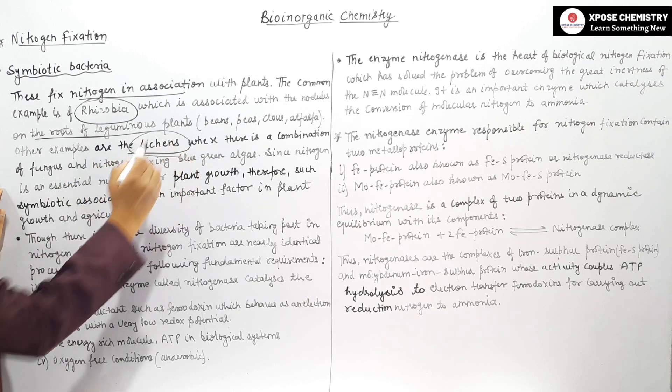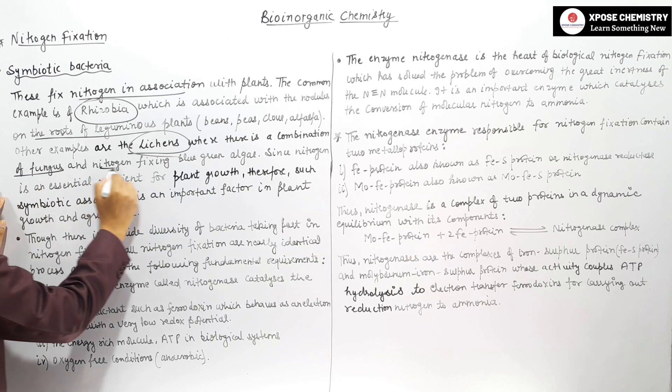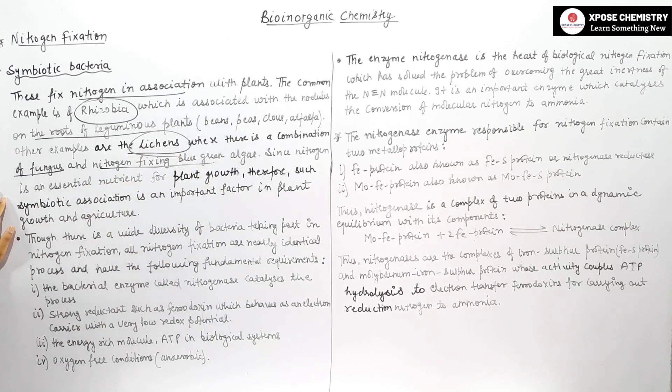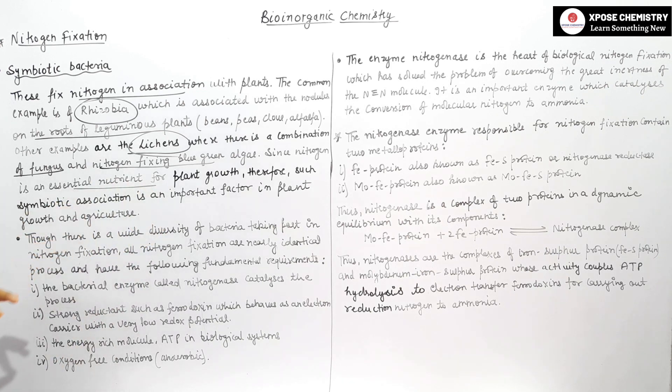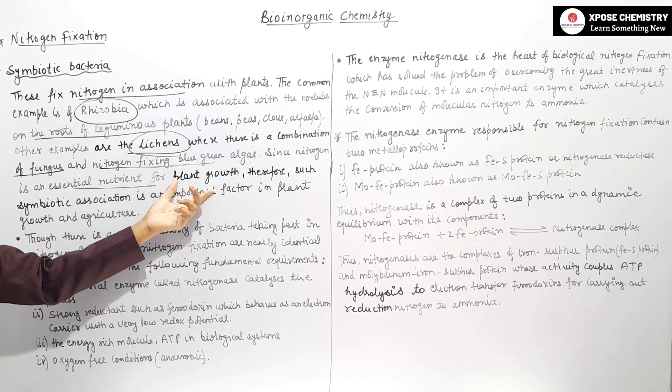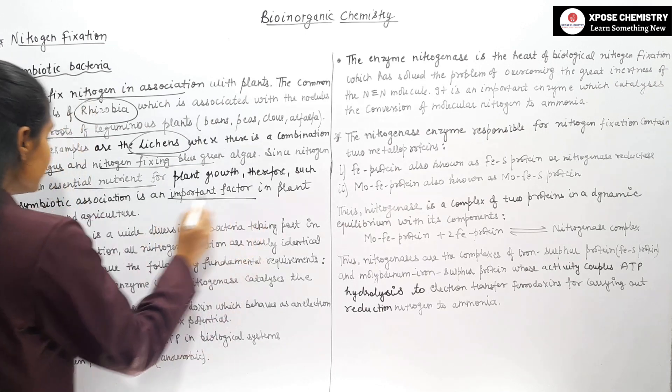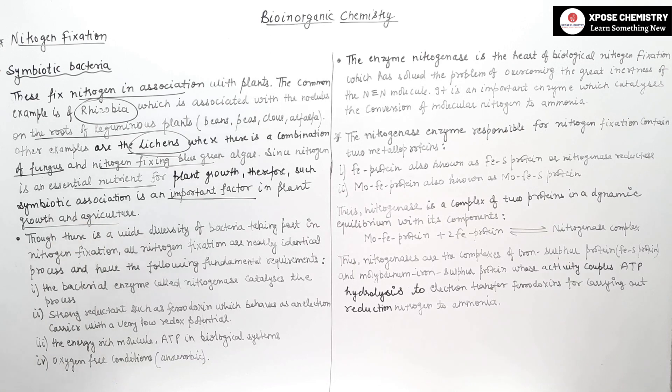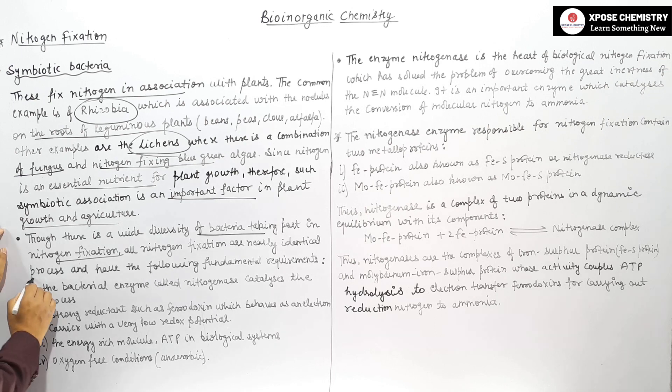Another example is lichens, where there is a combination of fungus and nitrogen fixing blue-green algae. All nitrogen fixation are nearly identical processes.